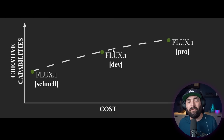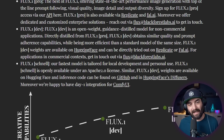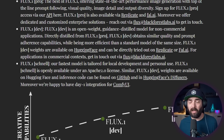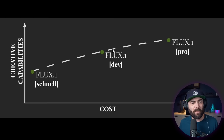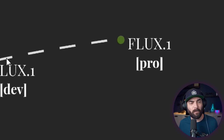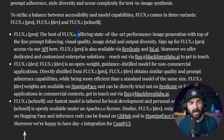Then you have Flux One Dev, their middle-of-the-line model. It's slightly more efficient than their top-of-the-line model and slightly more prompt-adhering and performant than Flux One Schnell. This one can only be used for non-commercial applications, so you can't create a tool using it and sell access. Then there's their top-of-the-line model, Flux One Pro, which offers state-of-the-art performance and is really designed for enterprise solutions.